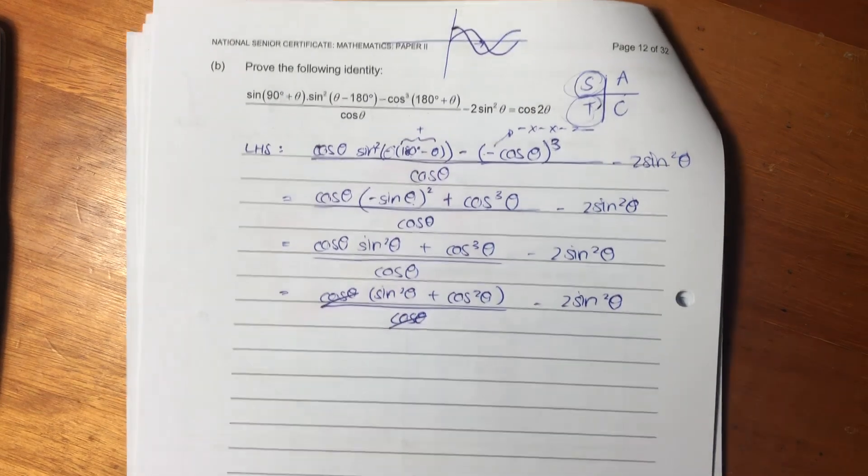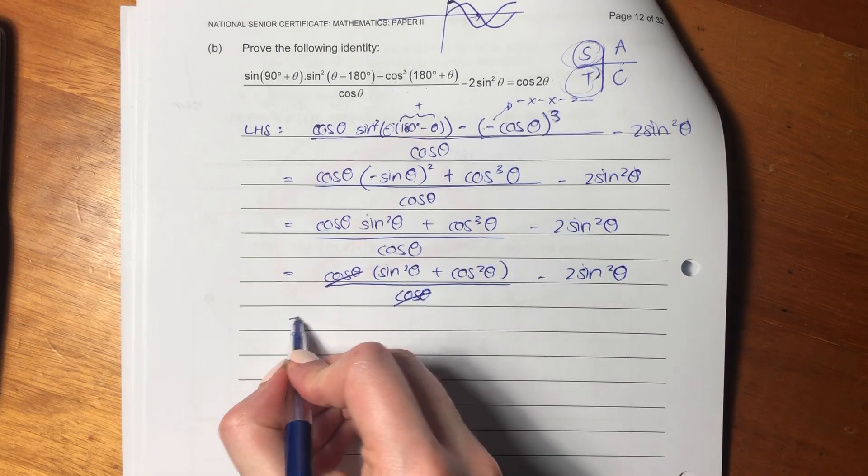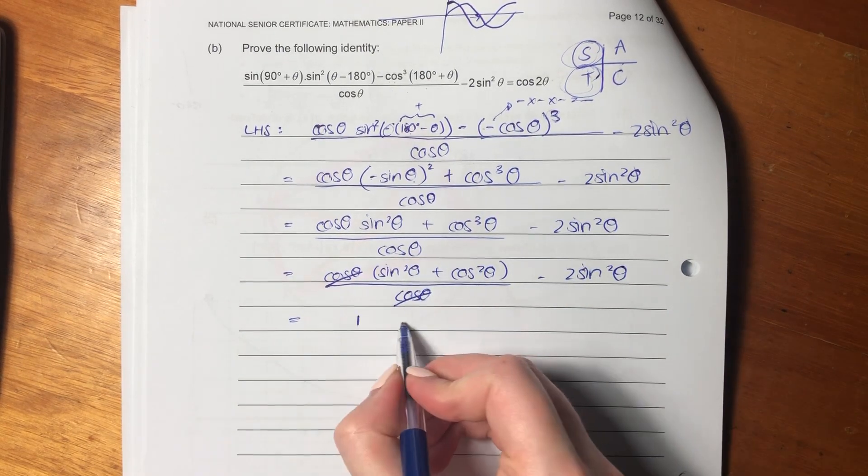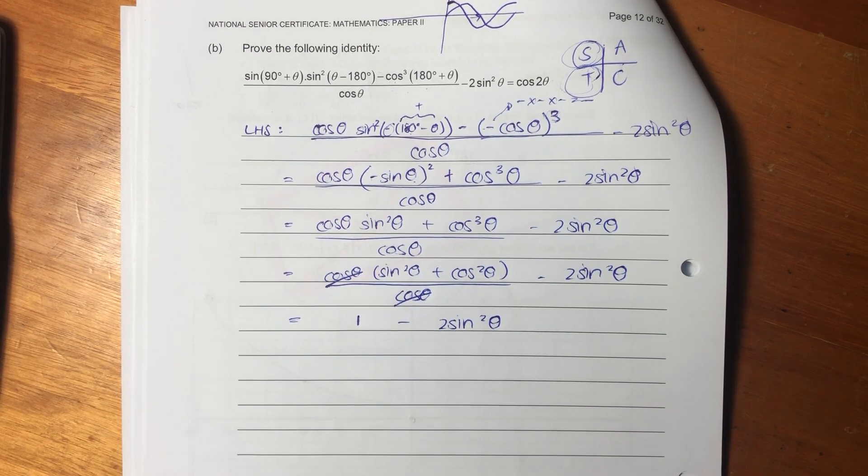Now, what does sine squared plus cos squared theta equal? Equals one. So it's one minus two sine squared theta. So now, that's pretty much all we can do on that side.